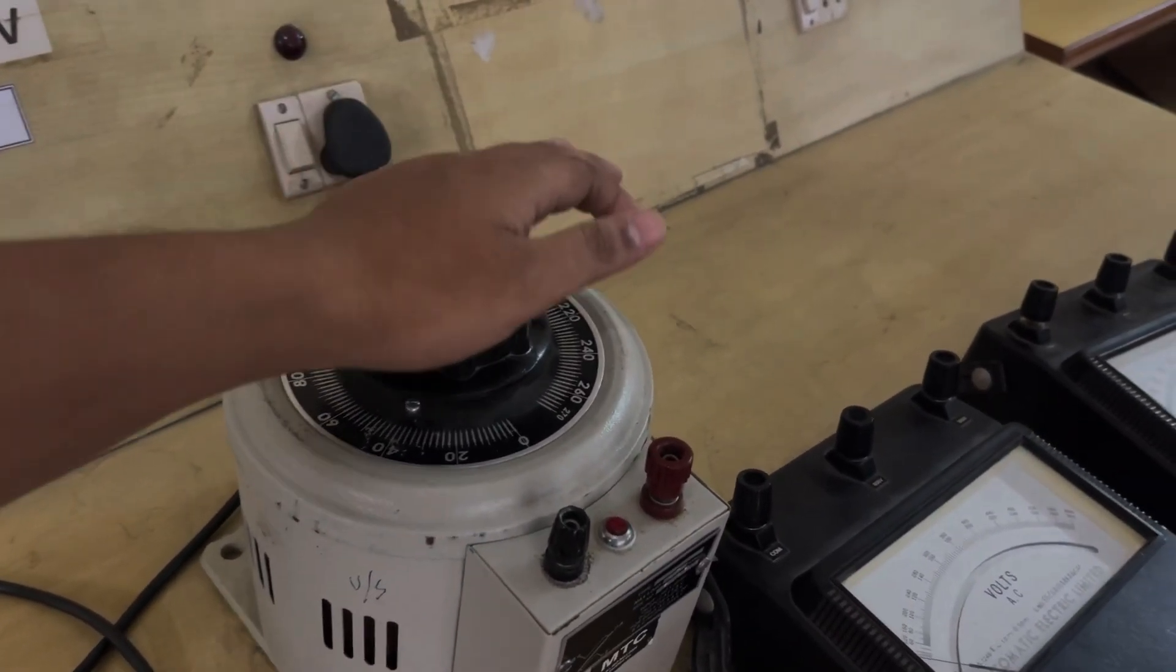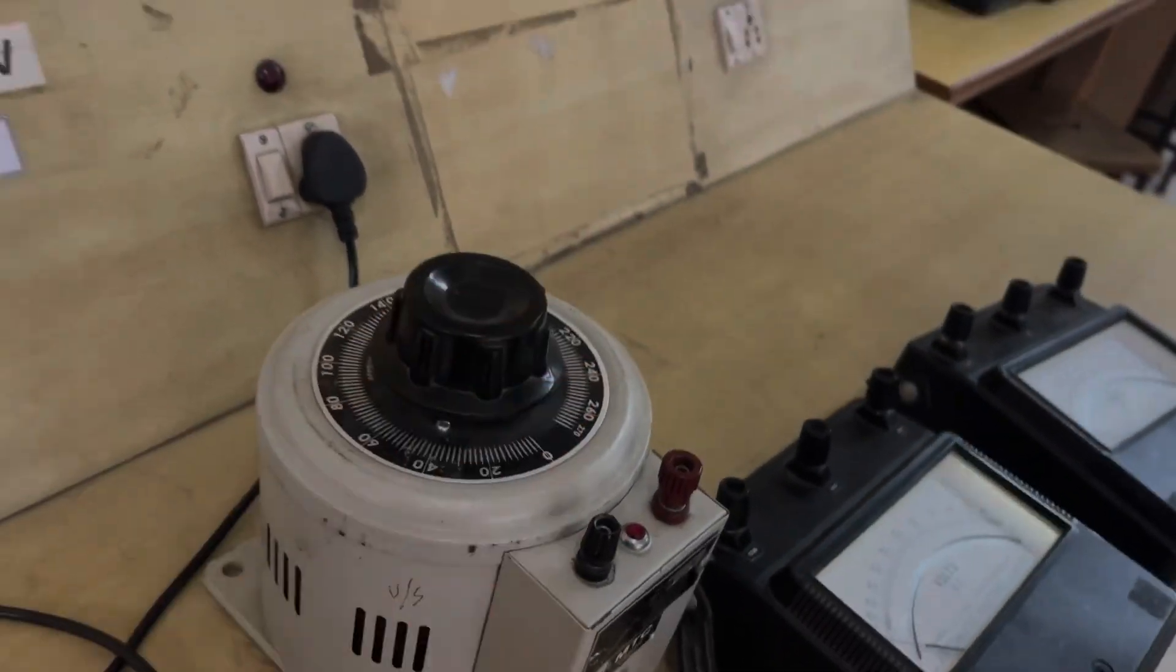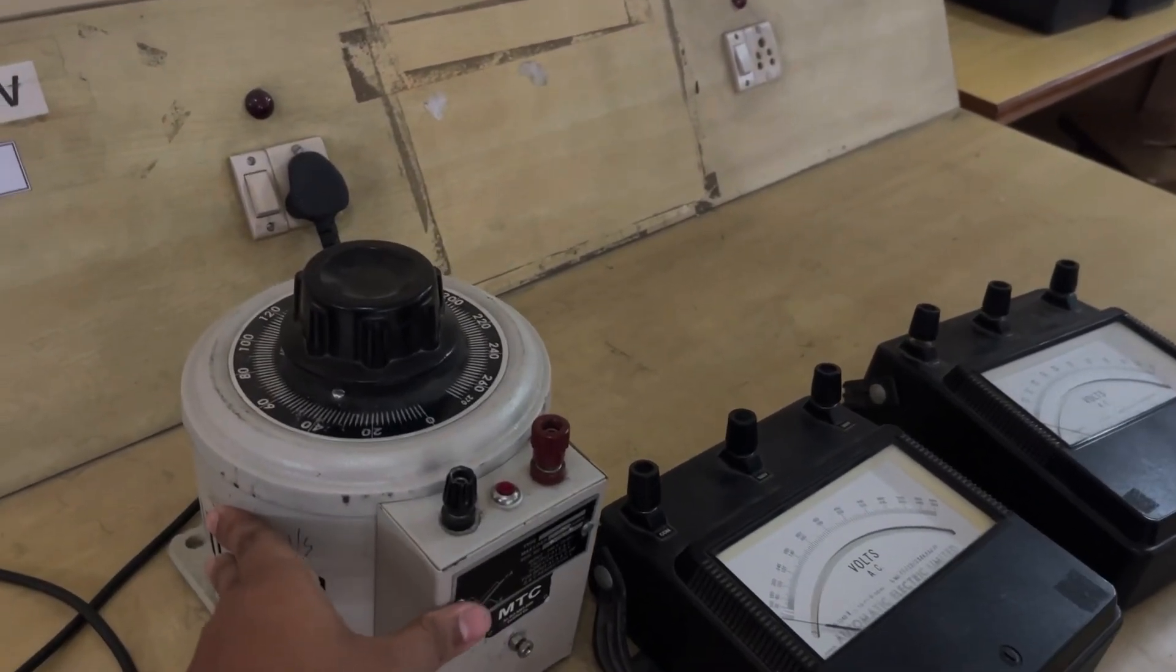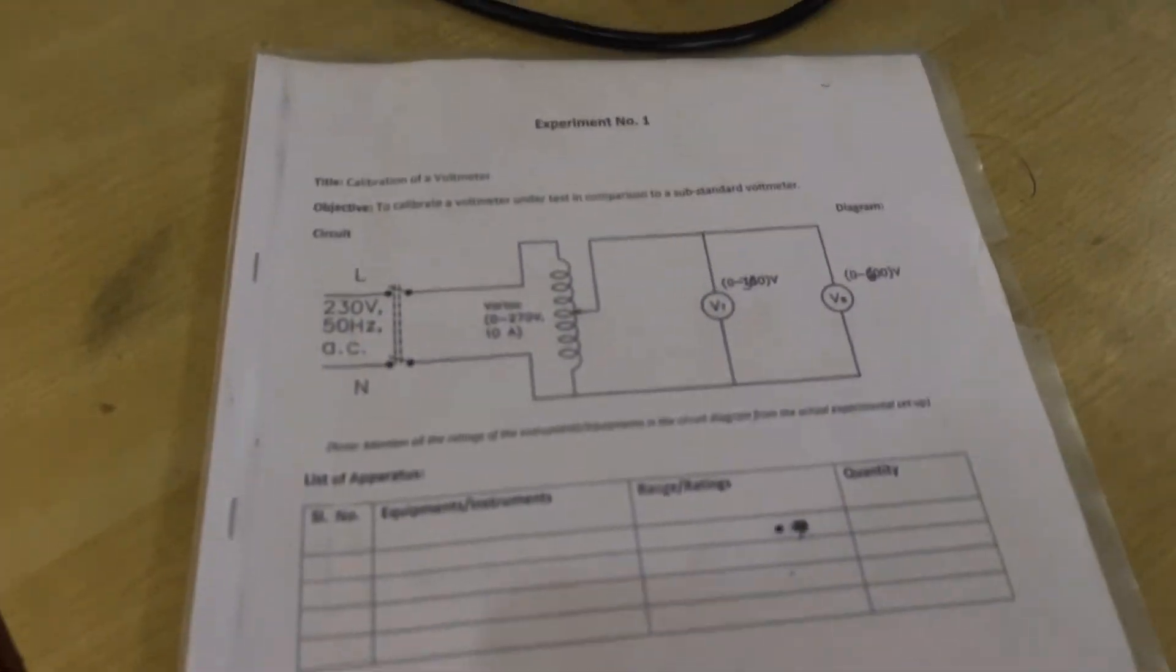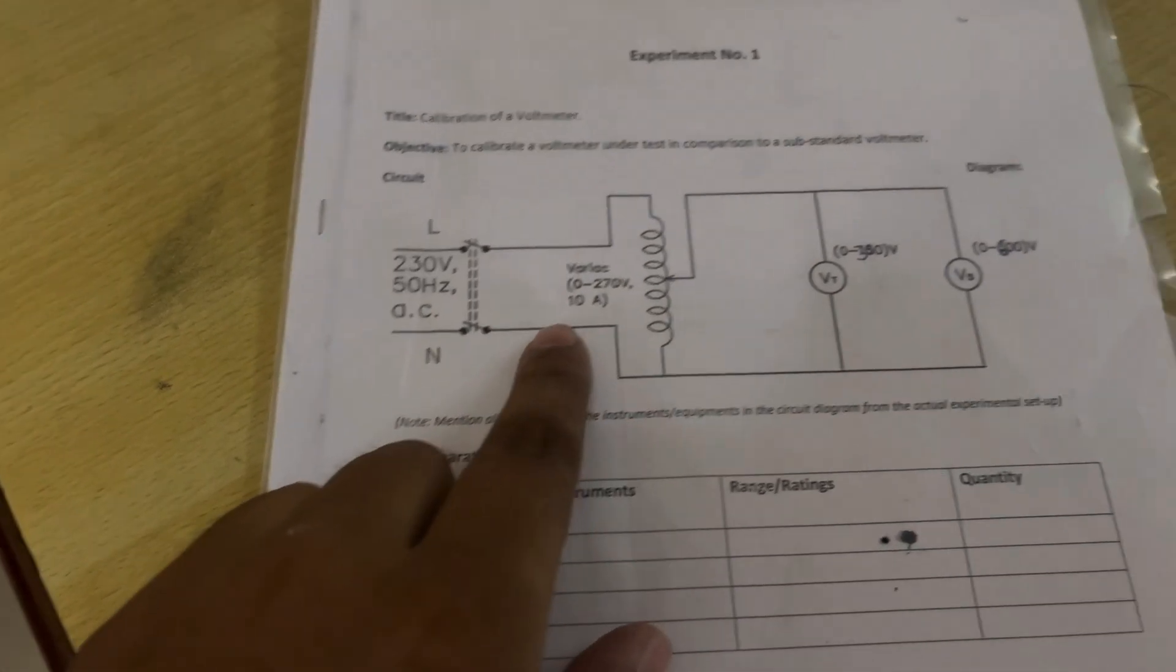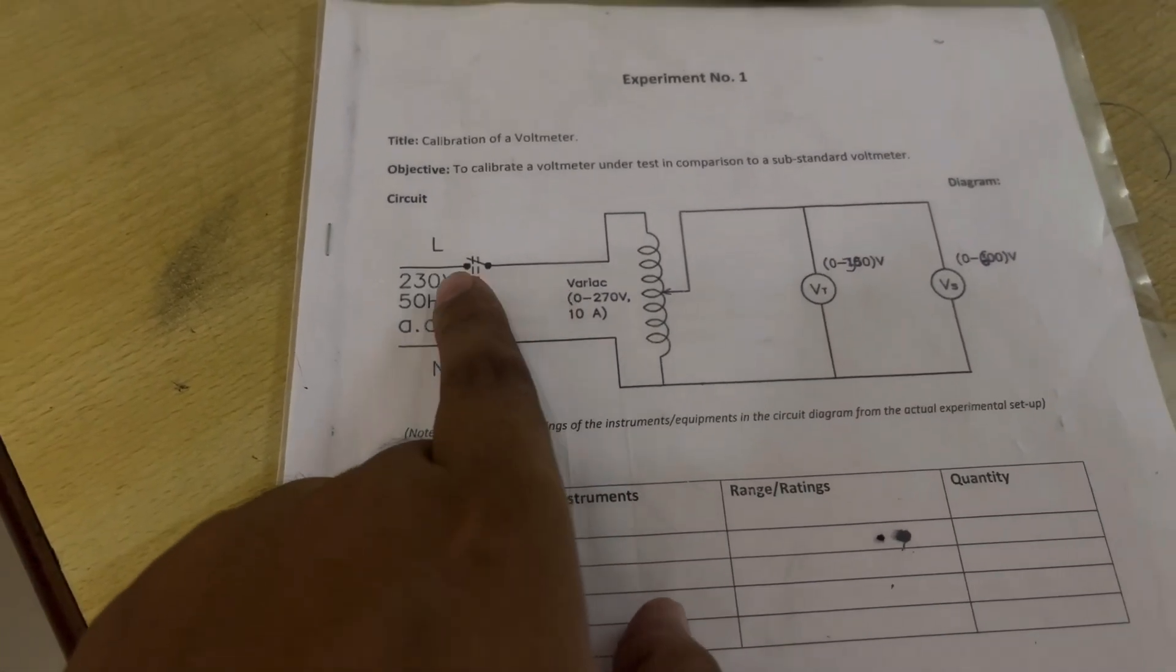Let's see how to connect this circuit. This is the circuit with 230 volt 50 Hertz supply and then the variate. This is supply one and this is the variate.